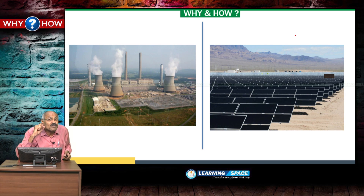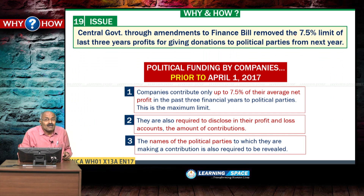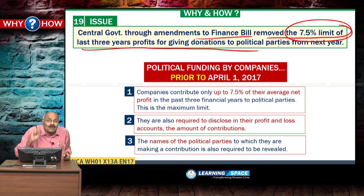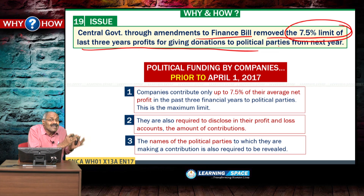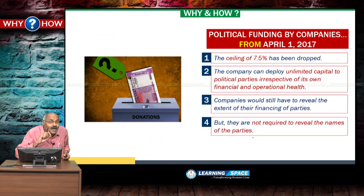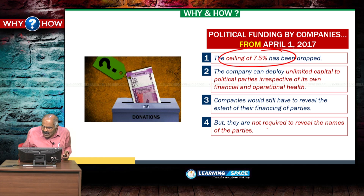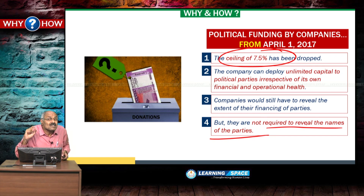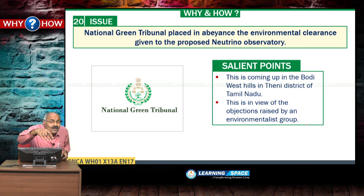The Central Government, through amendments to the Finance Bill, removed the 7.5% limit on the last three years' profits for giving donations to political parties. Prior to April 1, 2017, companies could donate only up to 7.5% of profits, and names of political parties were required to be disclosed. From April 1 onwards, this ceiling has been dropped and companies are no longer required to reveal the names of political parties. There is an apprehension this may lead to proliferation of shell companies to support political parties.